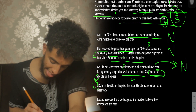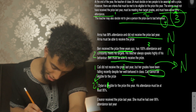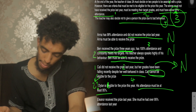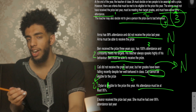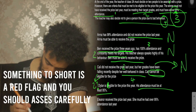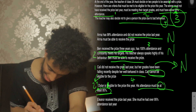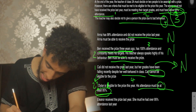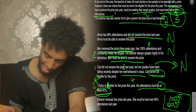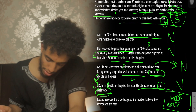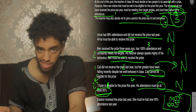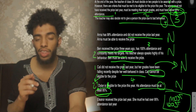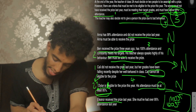Conclusion four says Dylan is eligible for the prize this year and his attendance must be at least 95%. With statements like this, there's usually a trick. Going back to condition three, it says attendance must be above 95% — 'at least 95' could include 95 itself, which would not meet the condition. So this conclusion is also incorrect.